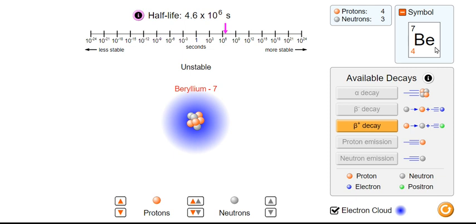So learners can interact by adding protons or adding neutrons and see the effect it has on the available decays, on the mass, and on the atomic number as well. They will interact with it. They will see it.